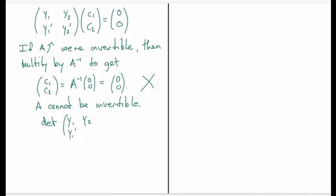So we know that the determinant of [y1, y2; y1 prime, y2 prime] is equal to 0. But this is exactly the Wronskian.